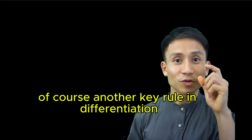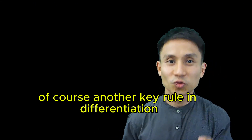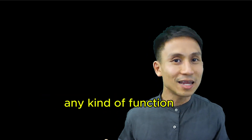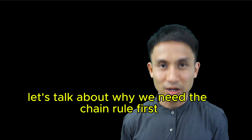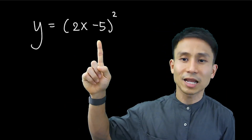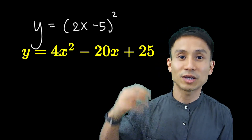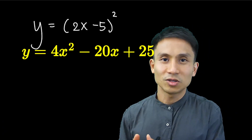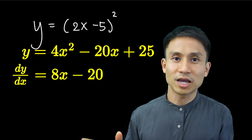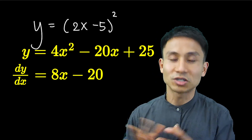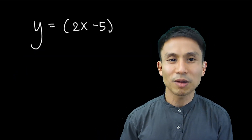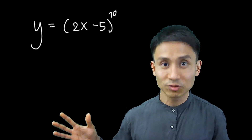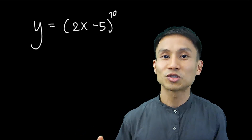What is the chain rule? The chain rule is another key rule in differentiation, apart from the product rule, that allows you to differentiate any kind of function. If you want to differentiate a function like (2x-5)², without the chain rule you would have to expand it to 4x²-20x+25, using the distributive property. But what if the power is changed to 10? Expanding that would give 11 unique terms — far too time-consuming.